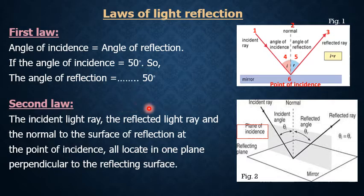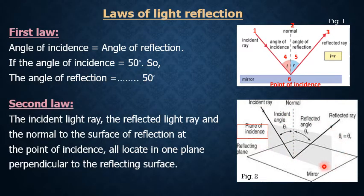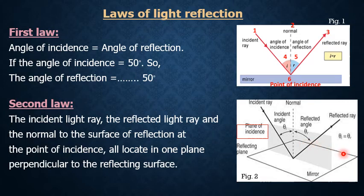The second law tells us that the incident light ray, the reflected light ray, and the normal at the point of incidence are all in one plane, and this plane is perpendicular to the reflecting surface. Thank you for listening and have a nice day.